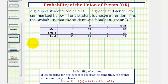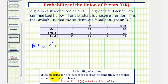We want to find the probability that if we select one student, it would be a female or the student would have a C on the test. These two events can occur at the same time since there are some females that also received a C on the test. Therefore these events are not mutually exclusive, and we'll have to apply the probability formula for the union of two events when they're not mutually exclusive.